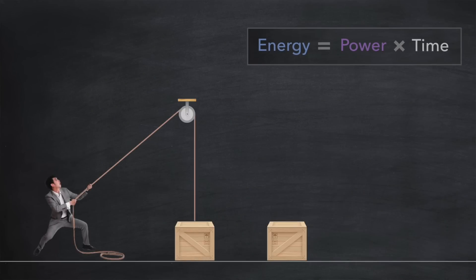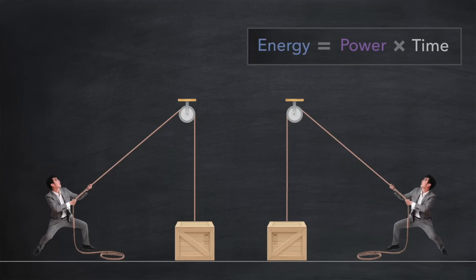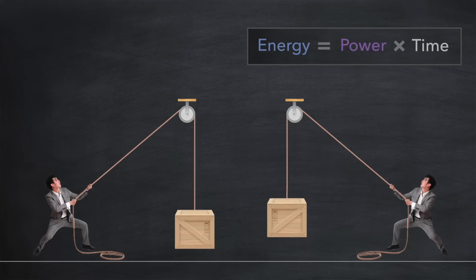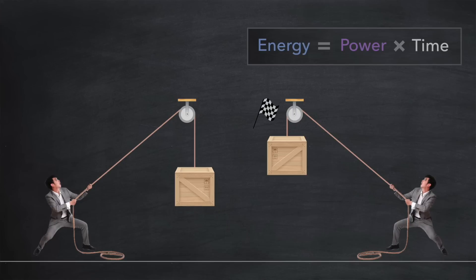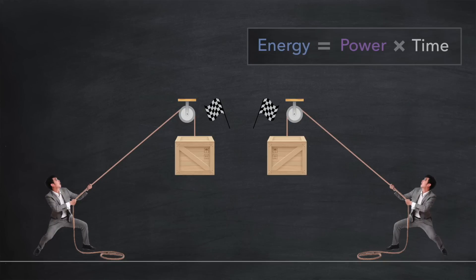Here are two people about to race each other lifting heavy boxes using a rope. The first person will pull with a certain amount of power, but the second person will pull with double that amount of power. As you might imagine, the second person wins this race easily — it only took them three seconds while the first person took six seconds. But here's the thing: although the second person put in twice the amount of power, both people still expelled the same amount of energy. This is because energy is equal to power multiplied by time — if you double the power, you halve the time.